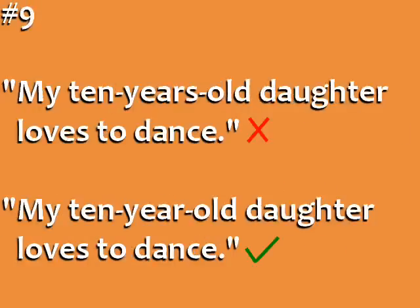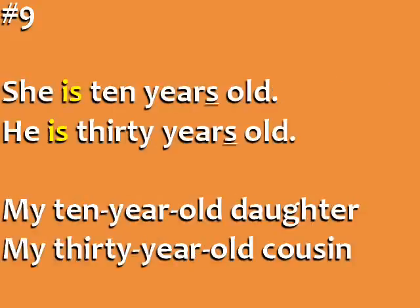Error number eight: 'My ten years old daughter loves to dance.' When the age comes after the word 'is,' then you say 'years old.' For example: 'My daughter is ten years old.' But when the age comes before the person or object as an adjective, then you say 'year,' not 'years': 'My ten-year-old daughter loves to dance.'